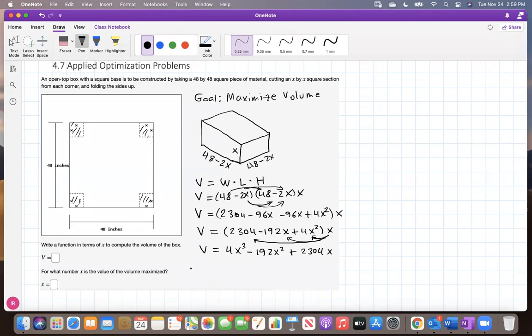x times negative 192x will be negative 192x squared. Here we go, and finally this should be plus 2304x. Now, remember in order to maximize the volume, we have to set the derivative of v with respect to x equal to 0, so we can catch a critical value. So the derivative of this guy is equal to 3 coming down, multiplying 4 is 12x squared minus 2 multiplying 192 will be 384x plus 2304. This is the derivative that should be equal to zero.